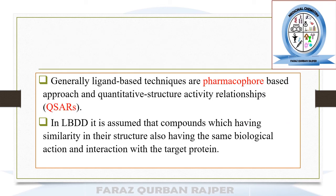There are two main techniques used in ligand-based drug design: one is pharmacophore modeling and the other is quantitative structure-activity relationship. In ligand-based drug design, we generally assume that ligands or lead molecules which have similar chemical structures — similar functional groups, similar pharmacophore — may have similar biological activity and cause similar types of interaction and bonding with the particular binding site on the targeted protein.